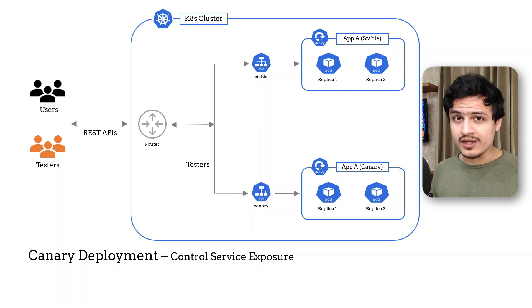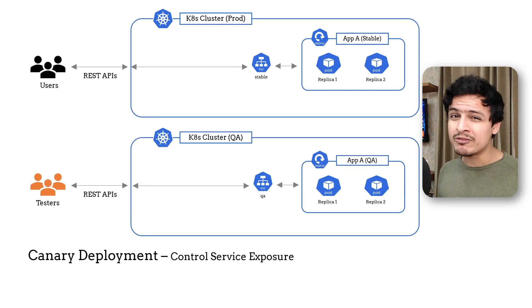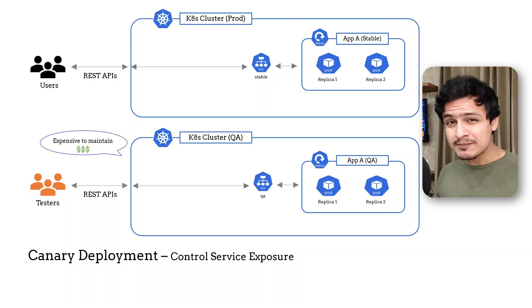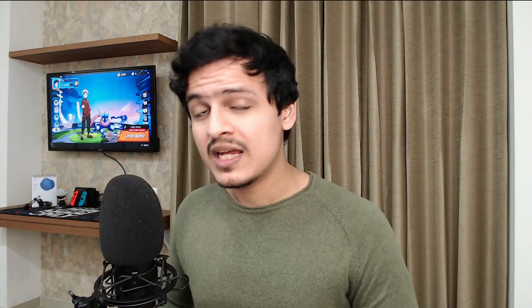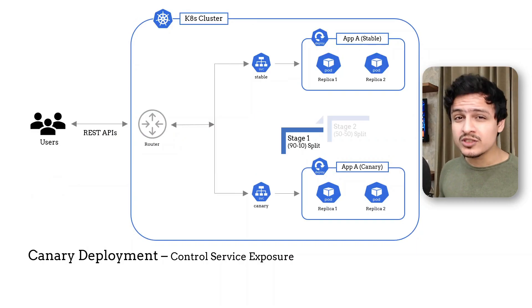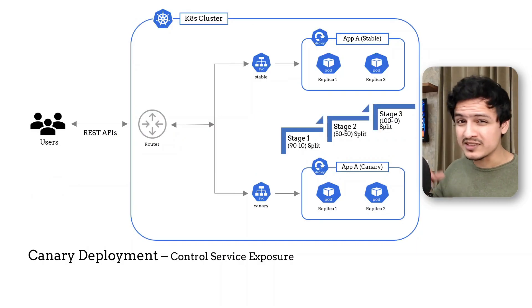Why do we need to complicate things and control traffic? Why not just spin up a QA environment and test things there? Well, it's going to be fairly expensive to maintain an extra environment identical to your production setup — and in fact that may not even be possible. Testing in a production environment with actual traffic and actual data is just not reproducible. Moreover, if you want to expose services gradually over multiple stages, you'll need some kind of routing logic.